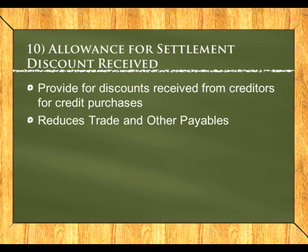The allowance for settlement discount received is similar, but provides for discounts received from creditors on credit purchases. It reduces trade and other payables and affects the trade and other payables note. To create it: debit allowance for settlement discount received and credit settlement discount received, which is an income account.